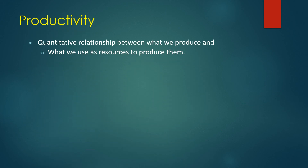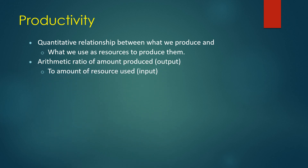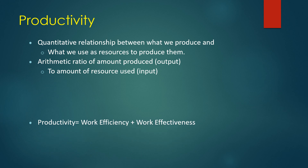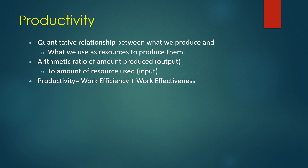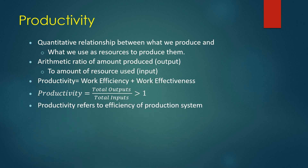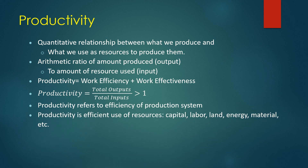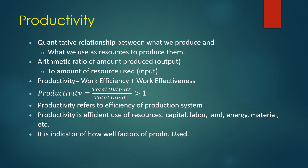Productivity is the quantitative relation between what we produce and what we use as resources to produce it — the arithmetic ratio of amount produced (output) to the amount of resources used (input). Productivity also refers to work efficiency plus work effectiveness. To calculate productivity: total outputs divided by total inputs, which must be greater than one. Productivity refers to the efficiency of a production system and the efficient use of resources such as capital, labor, land, energy, and materials.